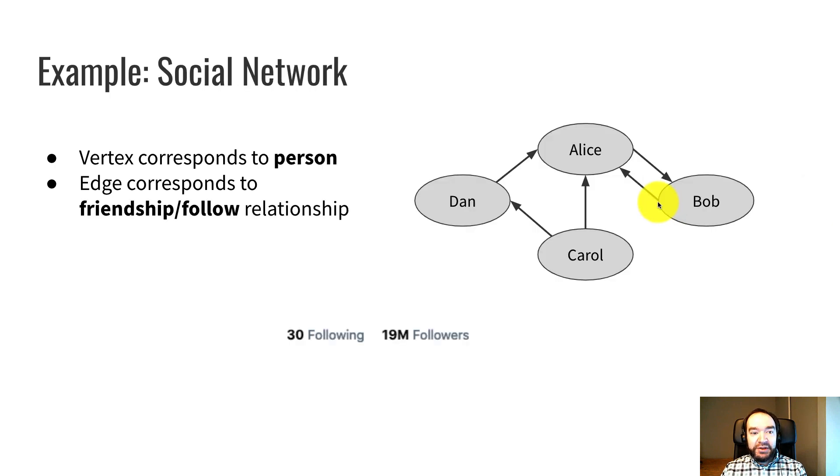Another example would be a social network. Here, the junctions are people. So every one of these vertices would model one person or one person's account on the social network platform. And an edge represents a relationship between two people. So on a platform like Facebook, you have friendship relationships. So we could create an edge between every pair of people that are in a friendship relationship.